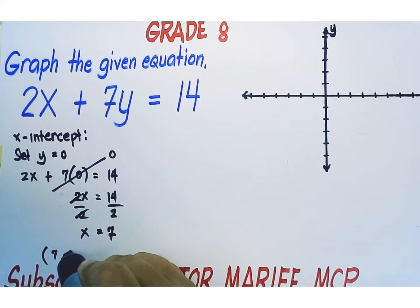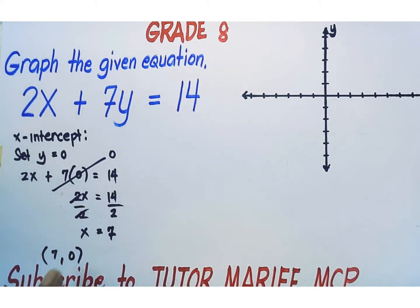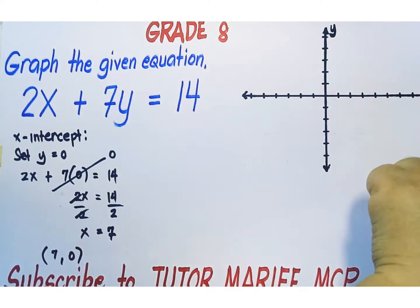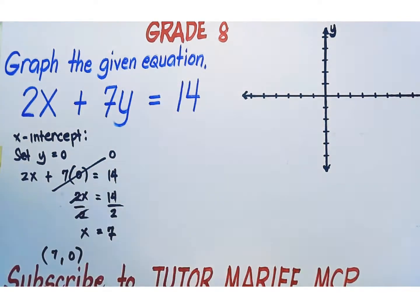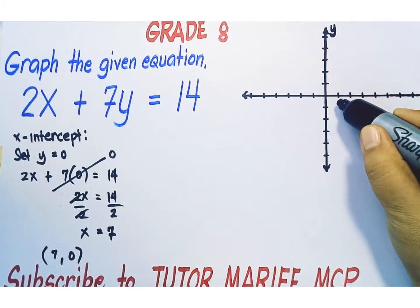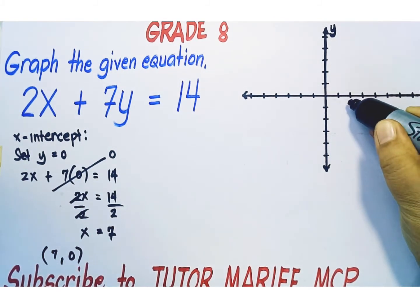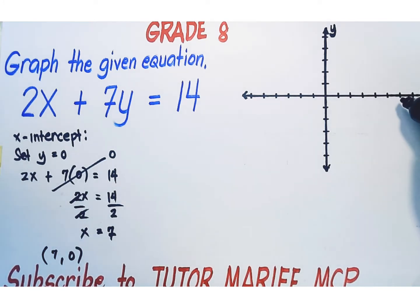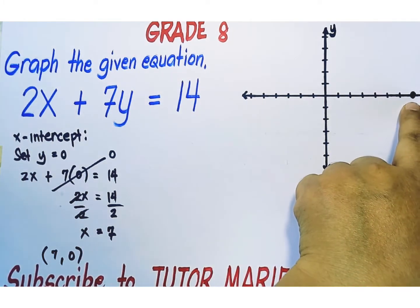Our first point is at (7, 0). Let's plot this point — it is located on the x-axis because it's the x-intercept of this equation. Counting along the x-axis: one, two, three, four, five, six, seven. This is our first point.